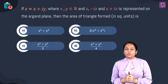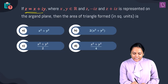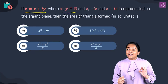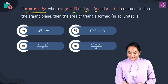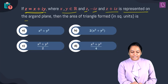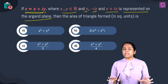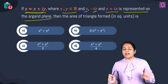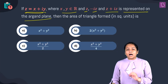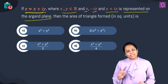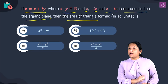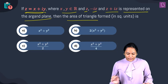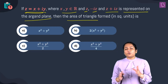Moving on: if z = x + iy where x and y are real numbers, and z, minus iz, and z + iz are represented on the Argand plane — where the real axis replaces the x-axis and the imaginary axis replaces the y-axis — these three points form a triangle. We have to find the area of this triangle in terms of x and y.